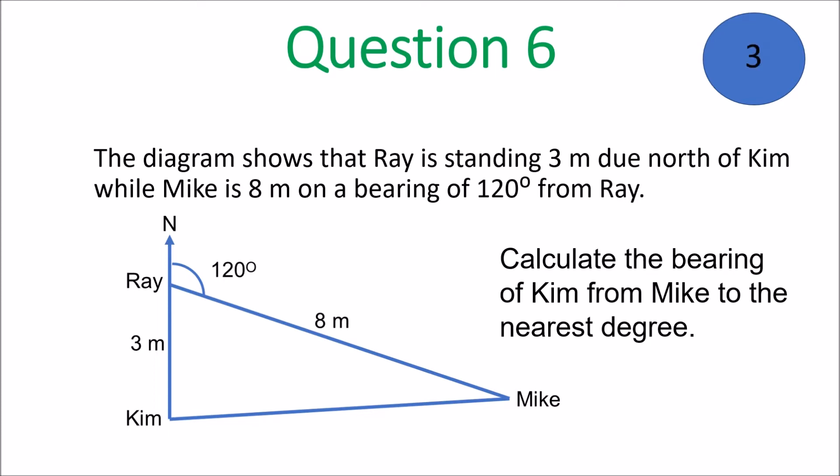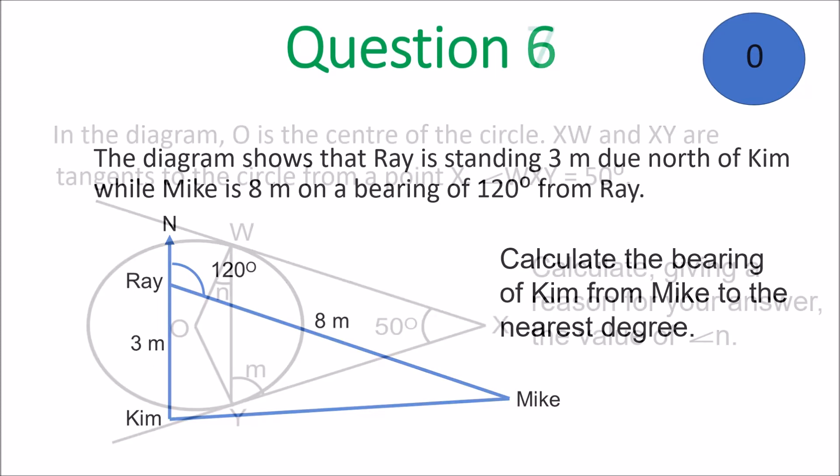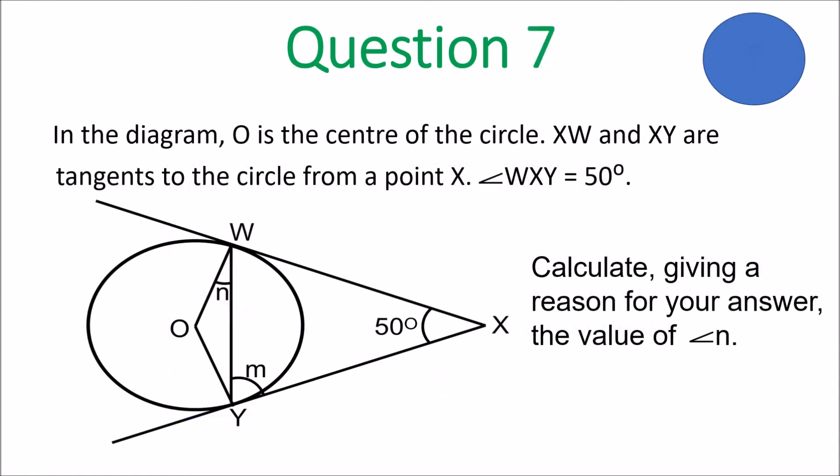This formula will be provided for you. This is the sine formula. Once you're dealing with a triangle that is not a right-angle triangle, you can use these formulas — the cosine one will define the side, and the sine one will help you define an angle.